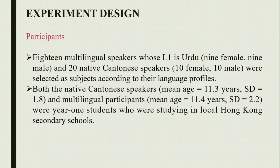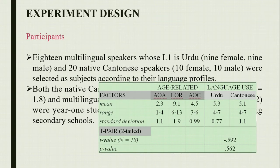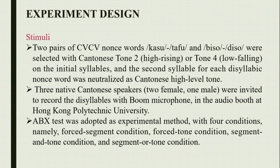They were year-one students studying in local secondary schools. The multilingual participants were exposed only to Urdu during the first one or two years of their lives and immigrated to Hong Kong at age two or three. They started learning Cantonese at age four to five and began learning English at age six. They used only Urdu at home and utilized both English and Cantonese as the language of instruction at school. At the time of the experiment, the multilingual participants had been living in Hong Kong continuously for more than nine years. Two nonword pairs were selected with Cantonese high rising or low falling tone on the initial syllable and the second syllable, with the second syllable specialized as the Cantonese high-level tone, similar to stimuli used by Zoltin.